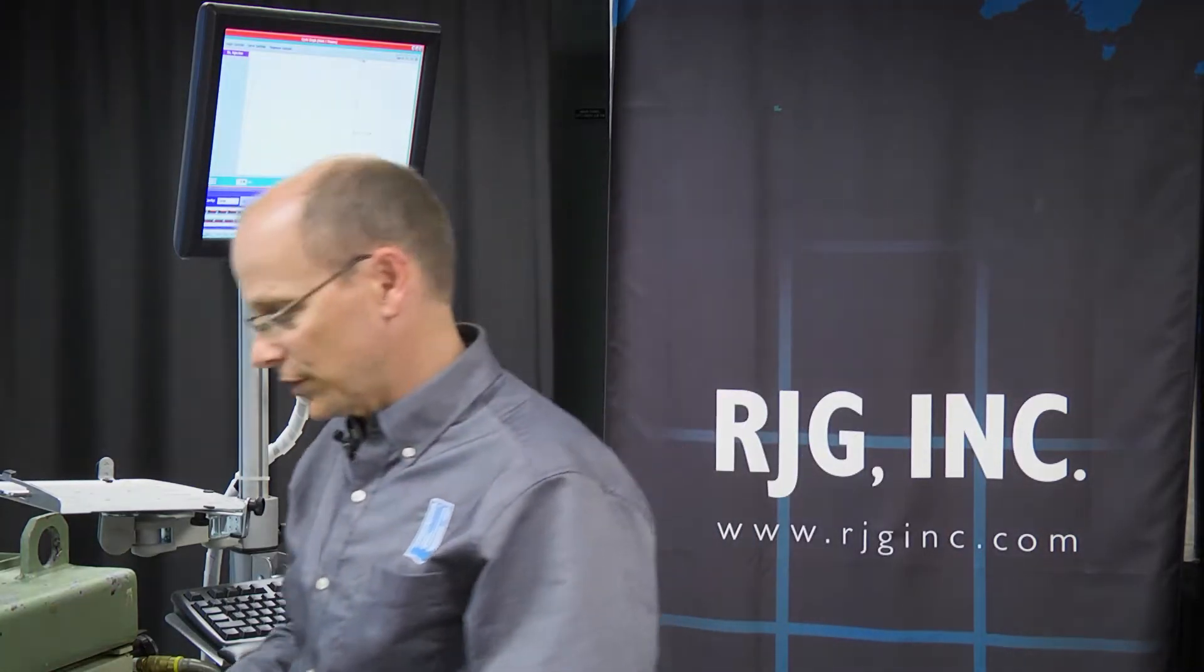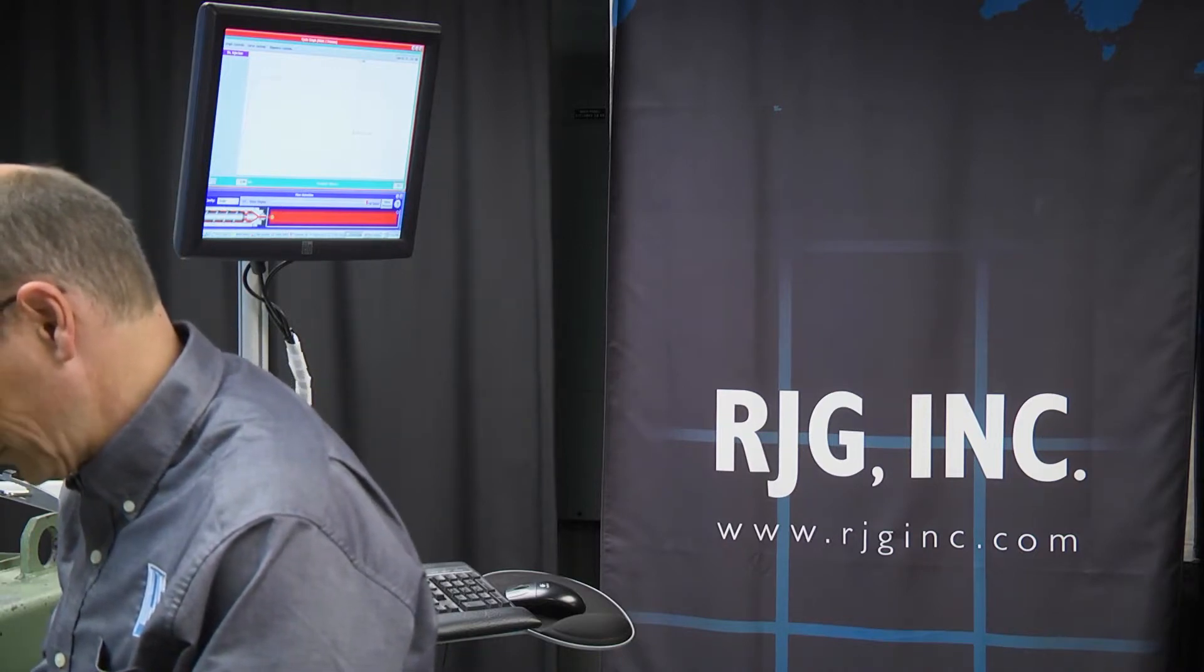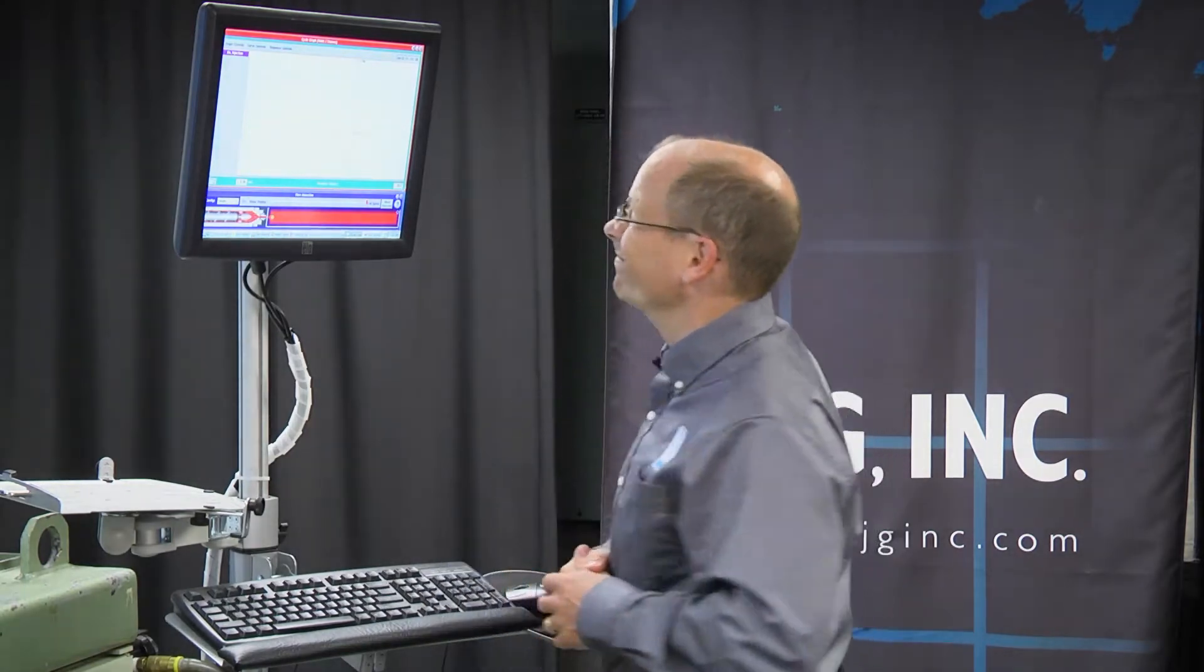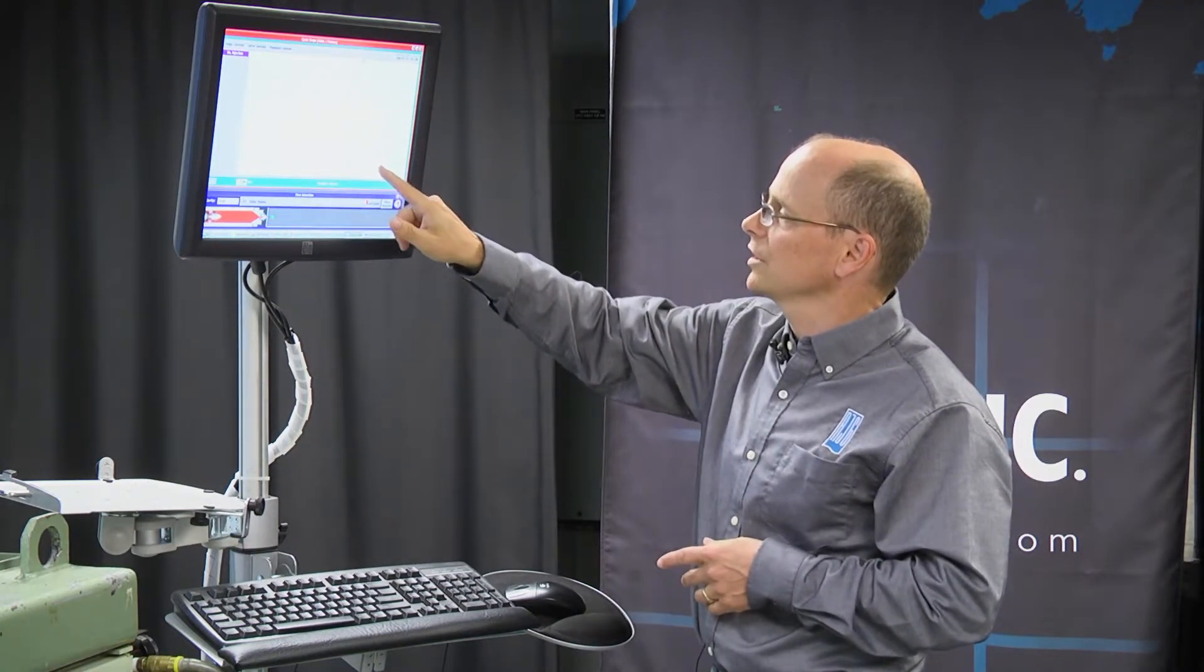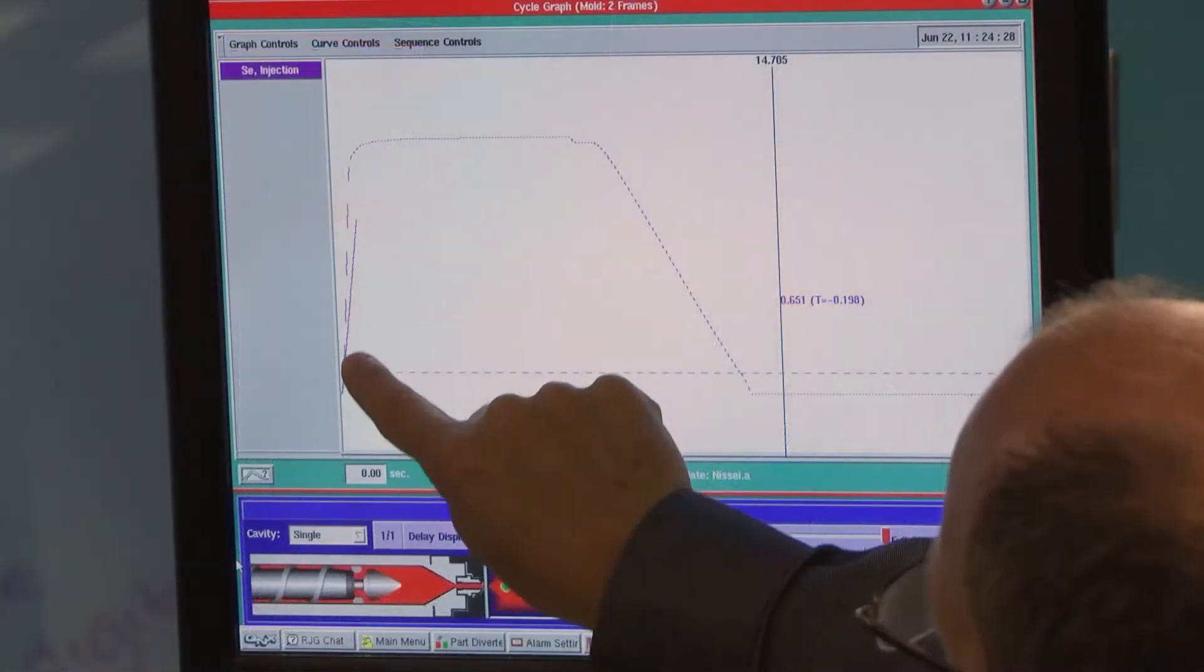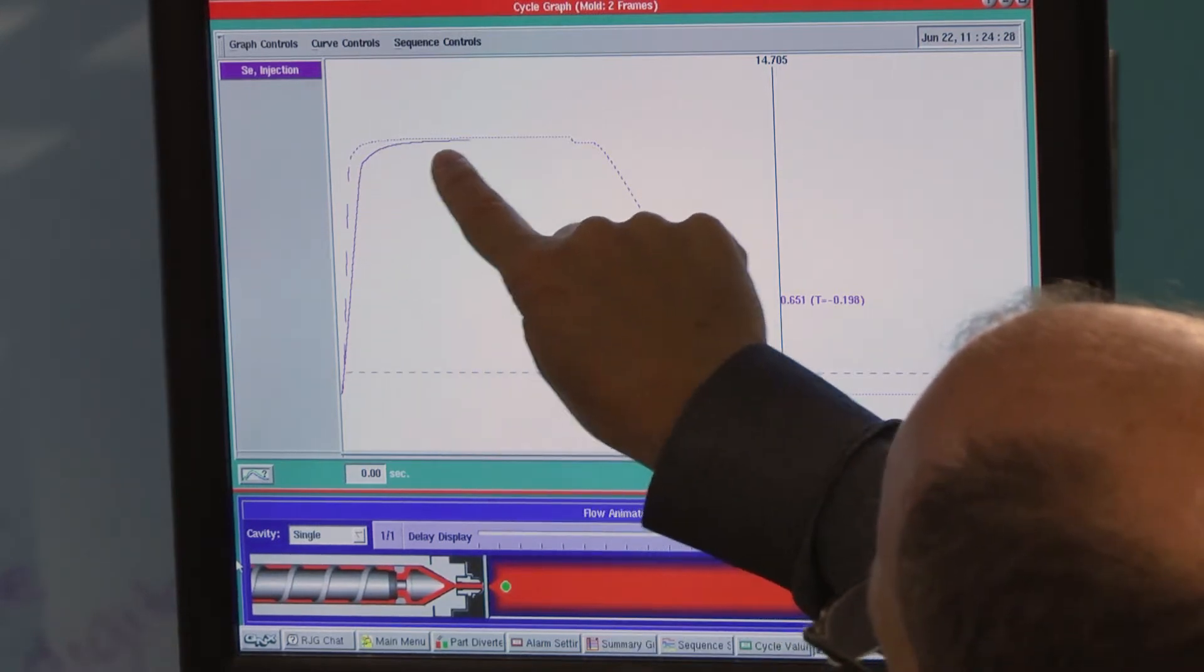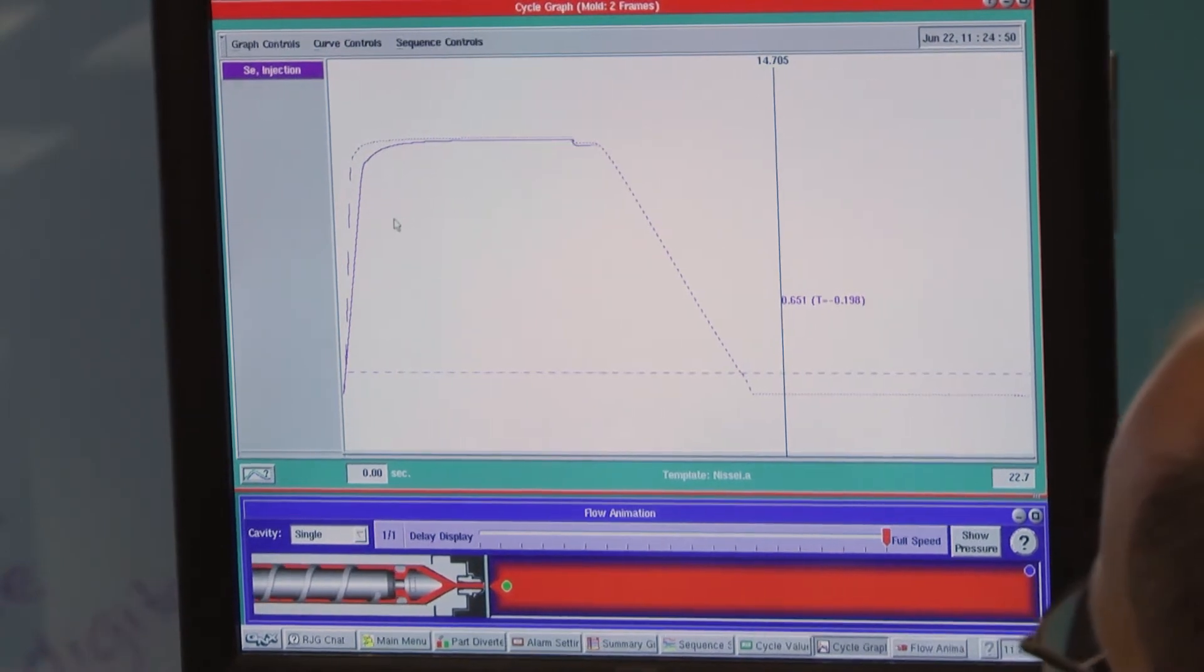In addition, if we change the fill speed, we'll take a moment and wait for the next cycle. Again, we see the screw is still recovering slow. When the fill speed changes, we can see it takes longer for the screw to reach its position, reach transfer position.